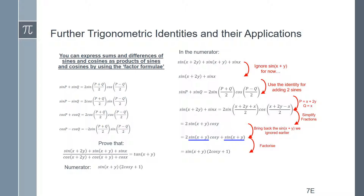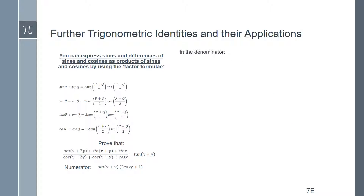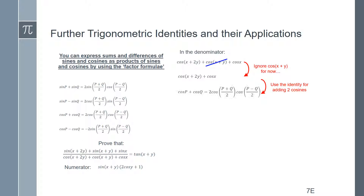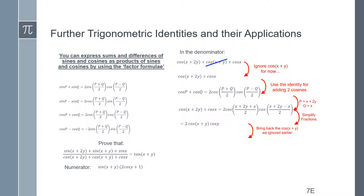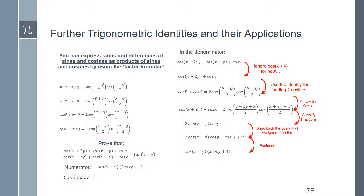Now let's try the same approach on the denominator. Setting aside cos(x+y), we apply the cos p + cos q identity to cos(x+2y) + cos(x), with p = x+2y and q = x. This gives 2 cos(x+y) cos(y). Bringing back the cos(x+y) we set aside, there is a common factor of cos(x+y), so the denominator factorises to cos(x+y)(2 cos y + 1).